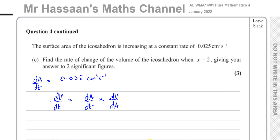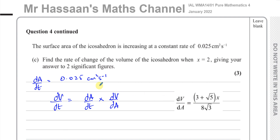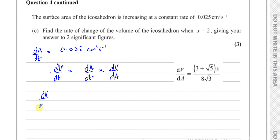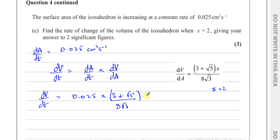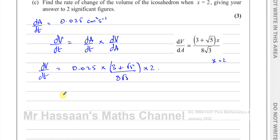We found dV/dA in the last part of the question. So dV/dt equals dA/dt times dV/dA, which is 0.025 times (3 + root 5)x over (8 root 3). When x equals 2, we substitute x equals 2, so we multiply by 2. That gives us the rate of change of volume with respect to time.